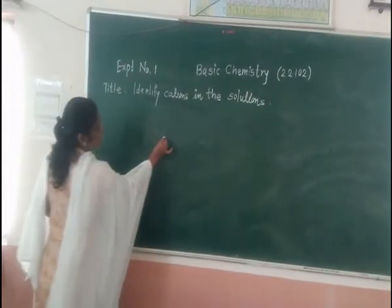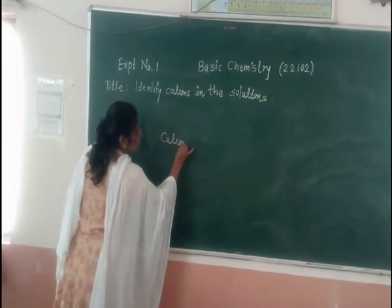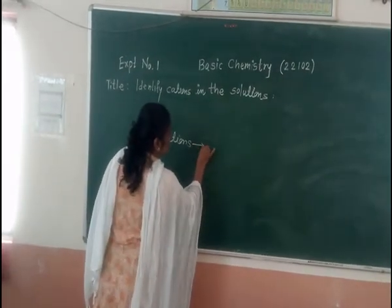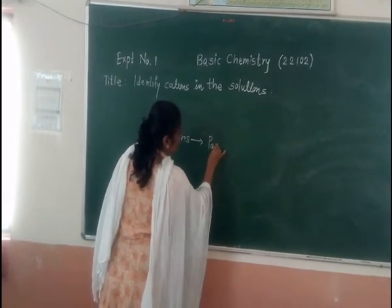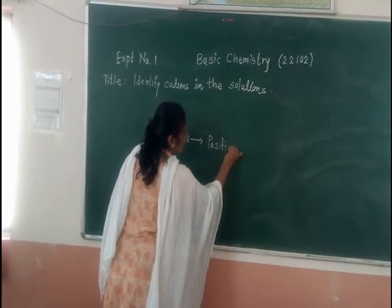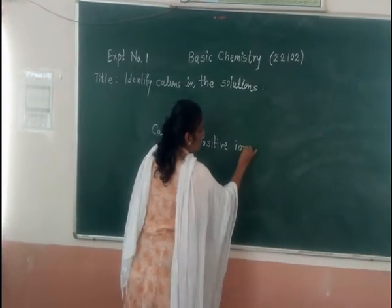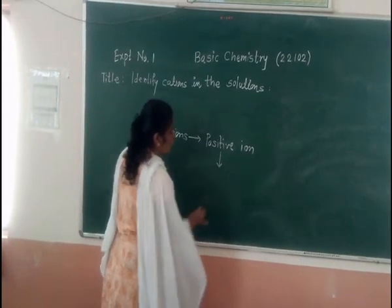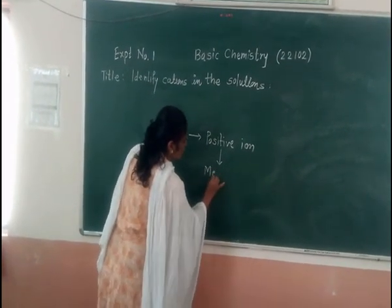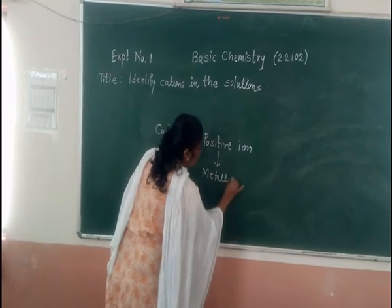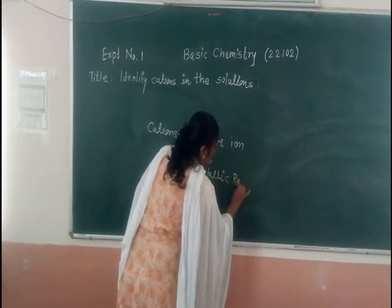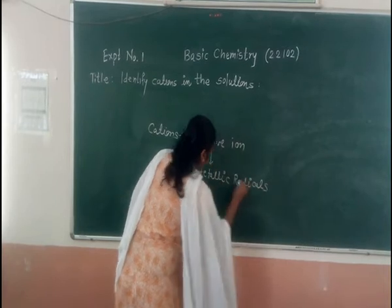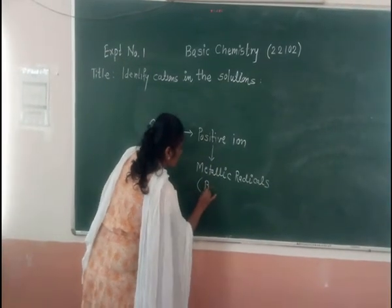During the theory lectures we have learnt what cations are. A cation is nothing but a positive ion — so positive ions we are going to call cations. Positive ions are obtained from metals, or these are the metallic radicals. They are also called basic radicals.